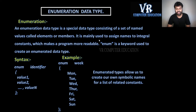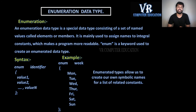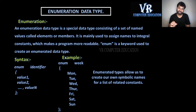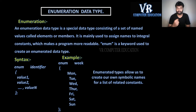Let us see the syntax: enum keyword, then an identifier — any name created by the user — followed by opening braces with value1, value2, and so on up to valueN, then closing braces. For example, enum week { Monday, Tuesday, Wednesday, Thursday, Friday, Saturday, Sunday }. Here 'week' is the identifier. Enumerated types allow us to create our own symbolic names for a list of related constants.